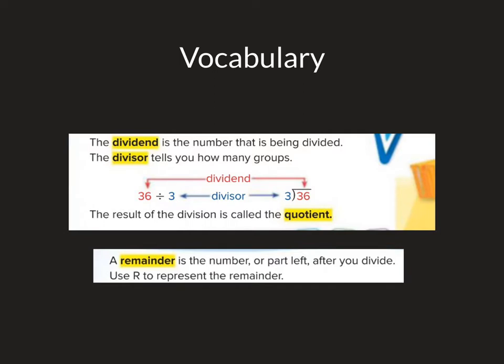Our vocabulary words are highlighted in yellow. The first one we're going to talk about is dividend. The dividend is the number that is being divided. So when I look at this one, I would say 36 divided by 3. So 36 is being divided into three equal parts — that's the dividend, whatever's inside our division house, or the first number.